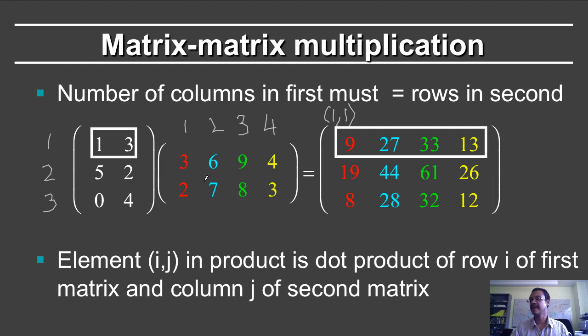Similarly for this number here, it's the dot product of 1, 3 and 6, 7. So 1 times 6 is 6, 3 times 7 is 21, you get 27. Now the next one, 1 times 9 is 9, 3 times 8 is 24, you get 33. 1 times 4 is 4, 3 times 3 is 9, you get 13.